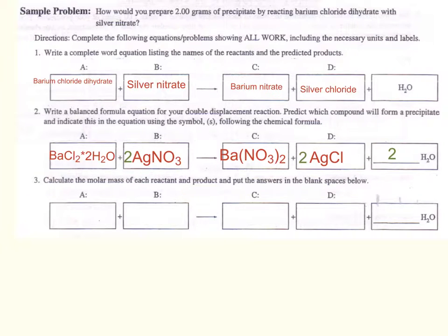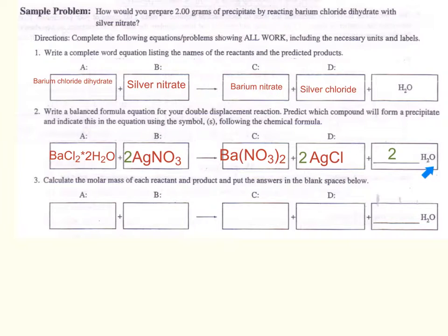The next thing we will do is determine the mass of our chemical compounds. Let's review how to determine the mass of our chemicals, using water as an example. For H₂O, we have 2 hydrogens — each weighing 1, so 2 times 1 is 2 — and 1 oxygen weighing 16. Adding 16 plus 2 gives us the mass of water as 18. We will now determine the molecular mass of all other chemical compounds and place those in their corresponding boxes.